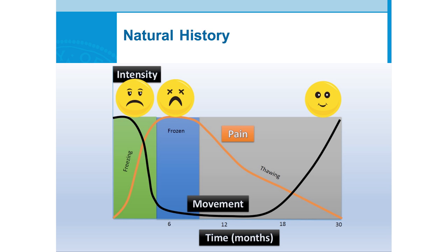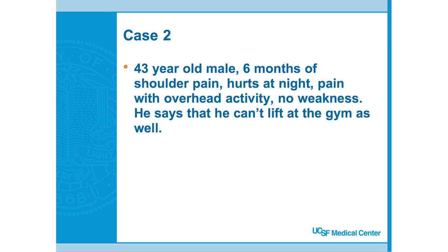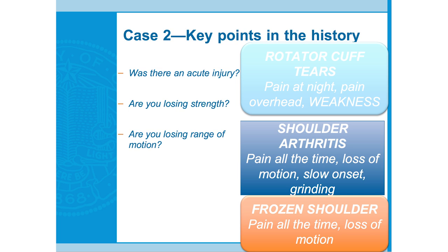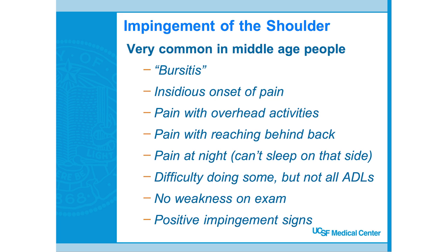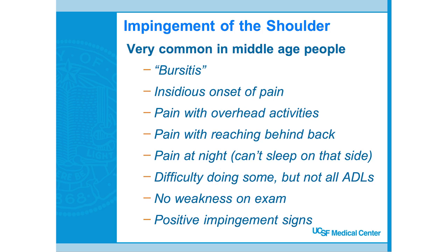Case two: 43-year-old male with six months of shoulder pain. It hurts at night but not all the time. He has pain with overhead activity but doesn't feel weak. No history of trauma, but he likes to lift at the gym. Running the algorithm: no acute injury, not losing strength, not really losing motion. This is classic shoulder impingement or bursitis, often due to overuse or poor mechanics — not a cuff tear.